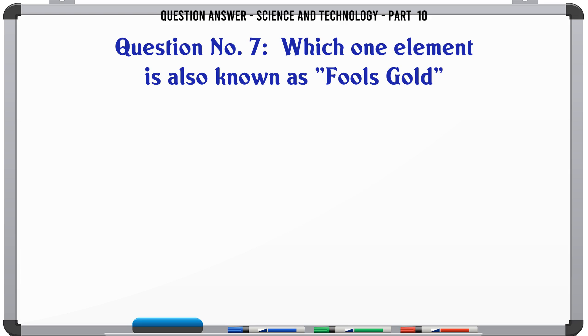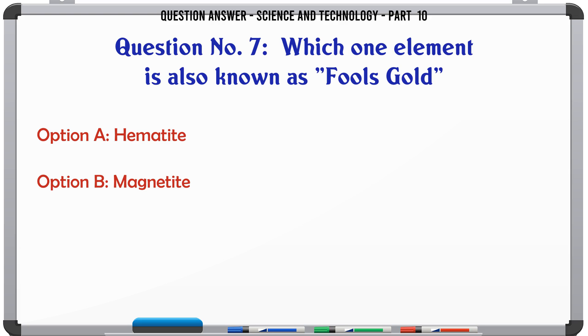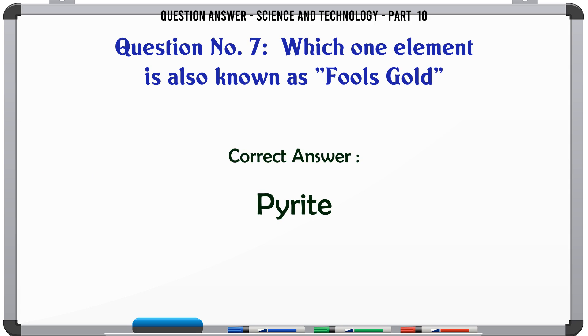Which one element is also known as Fool's gold? A. Hematite. B. Magnetite. C. Siderite. D. Pyrite. The correct answer is Pyrite.